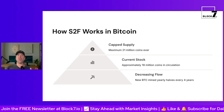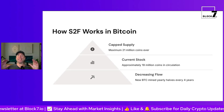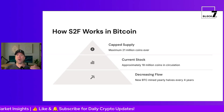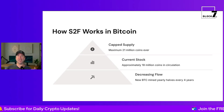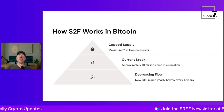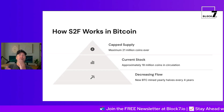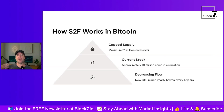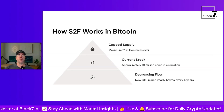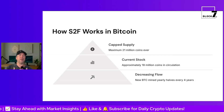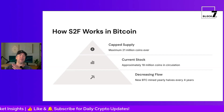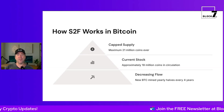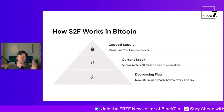How does S2F work in Bitcoin? You have a capped supply of 21 million coins, and the current stock is approximately 19 million coins in circulation — meaning these coins are already mined and are flowing around in big wallets, small wallets, and on exchanges. This is the supply, just like in gold — all the gold in the world as jewelry, electronics, or bars. In Bitcoin, that's the 19 million coins circulating.